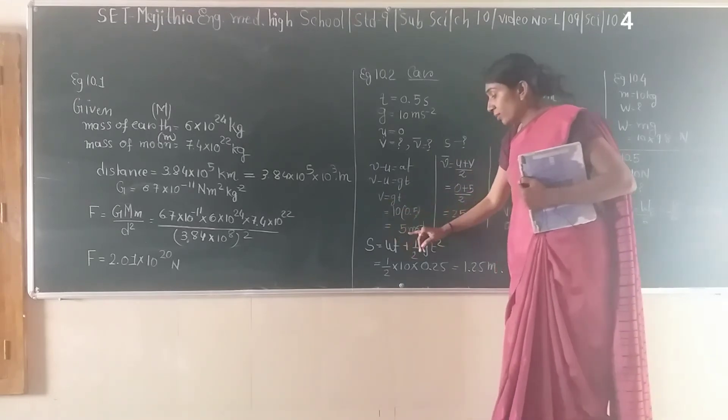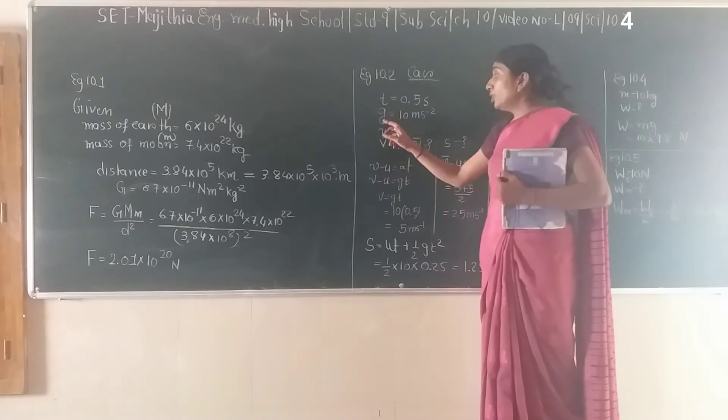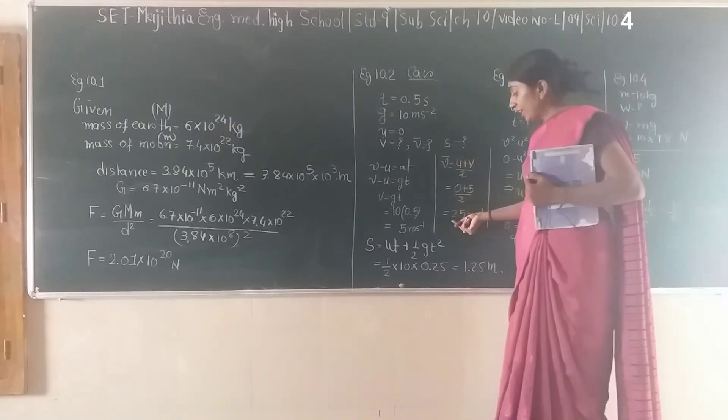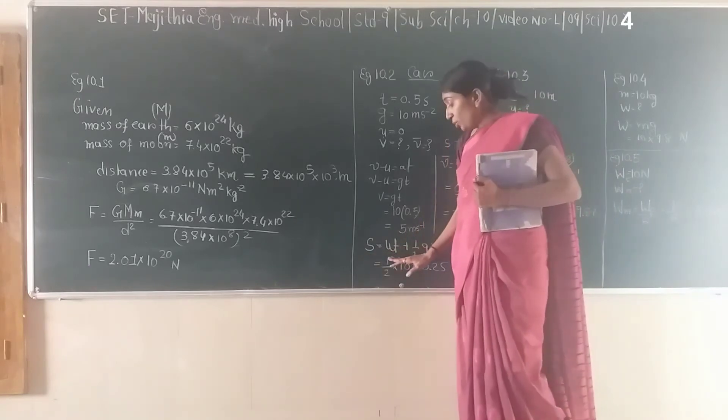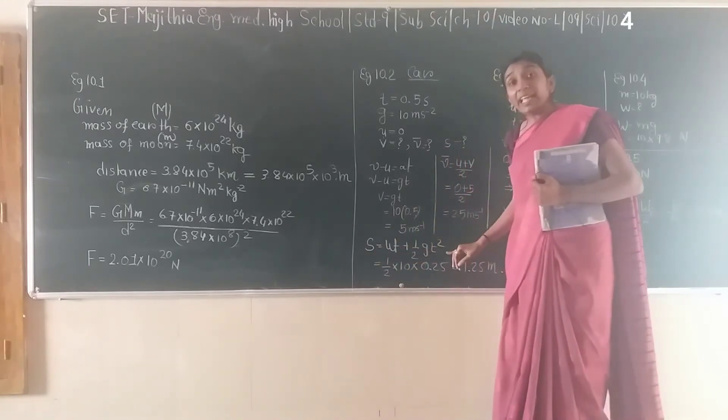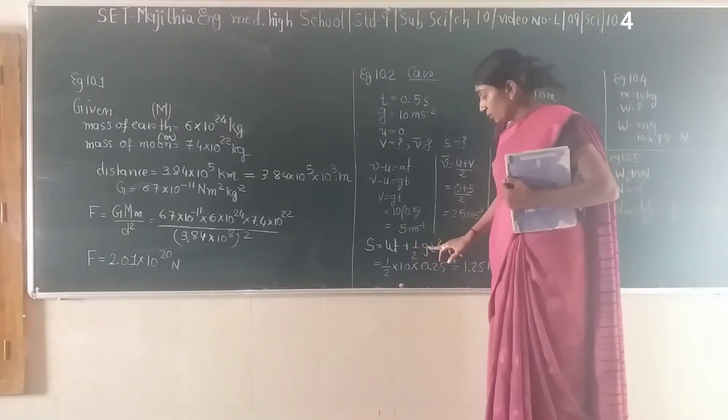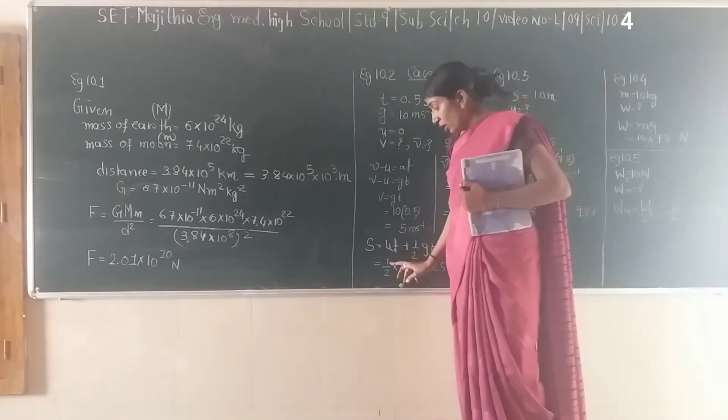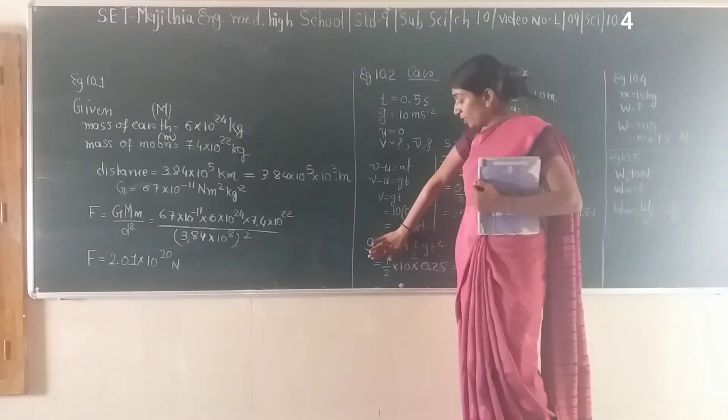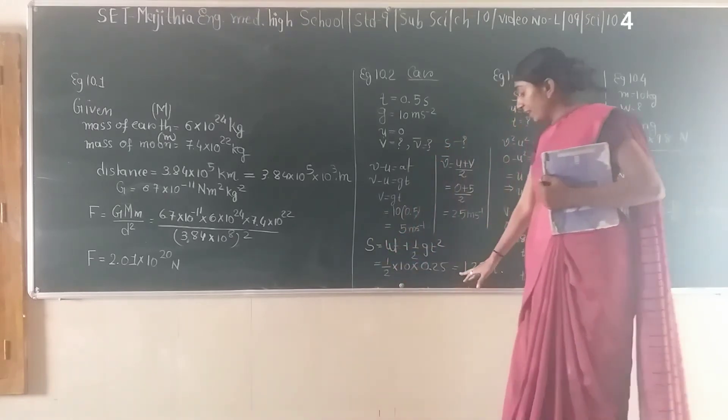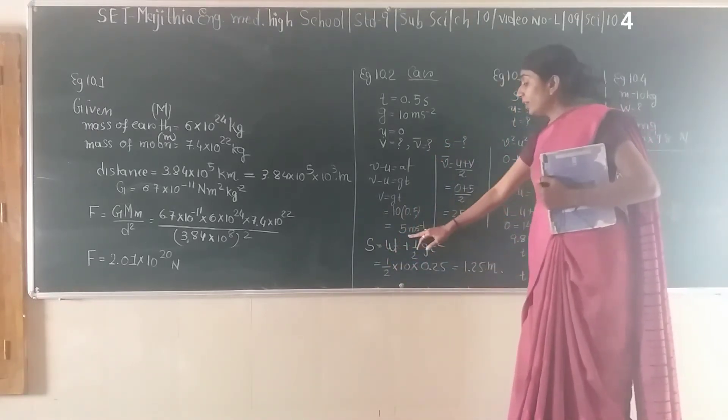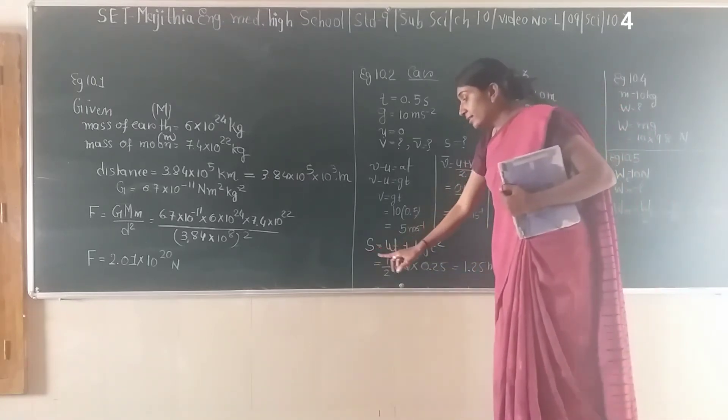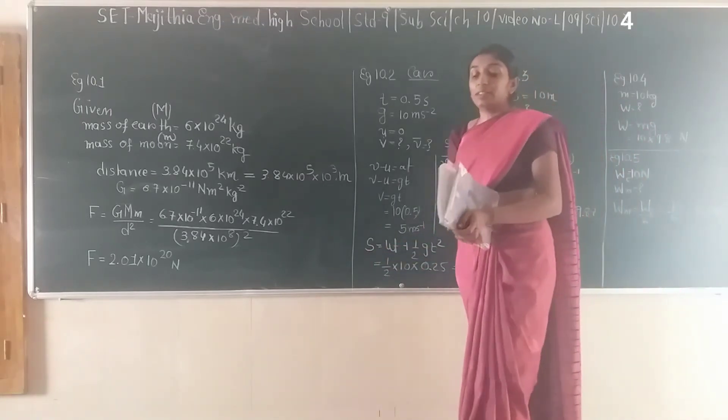So velocity is 5 m/s. Once we get final velocity and know initial velocity, we can calculate average velocity: (u + v) / 2, which gives us 2.5 m/s. Using s = ut + ½gt² (Newton's second equation of motion, substituting a by g), and since initial velocity is zero, we only consider the ½gt² term. We get the answer 1.25 meters. So our answers are: final velocity 5 m/s, average velocity 2.5 m/s, and distance traveled is 1.25 meters.